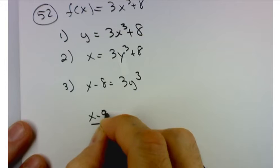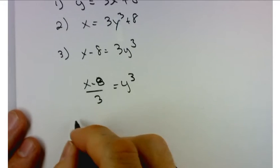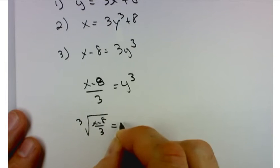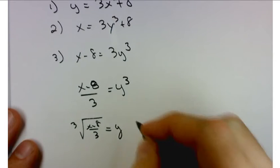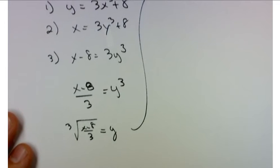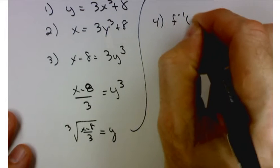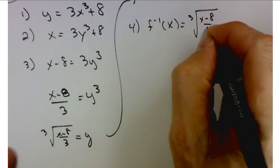So divide by 3, and then take the cube root. So the cube root of x minus 8 over 3 equals y. Don't forget that last step. Last step is to write that using function notation. And that is f inverse of x equals the cube root of x minus 8 over 3.